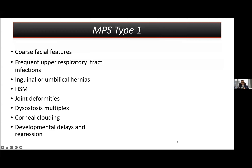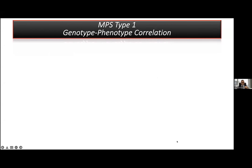We have some clinical subtypes of the disease. Hurler type is the most severe phenotype in MPS type 1. Hurler-Scheie is the intermediate phenotype. Scheie is the milder phenotype of the disease. We are always seeing this severity classification in nearly every metabolic disorder.